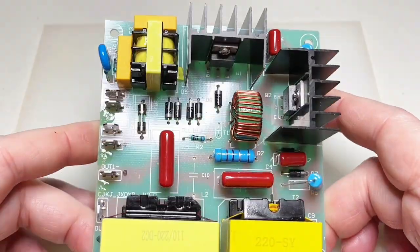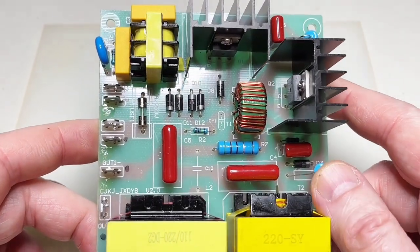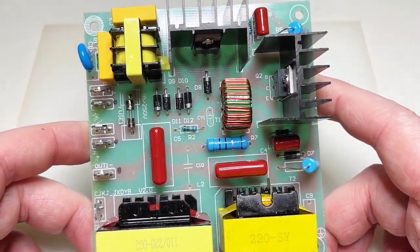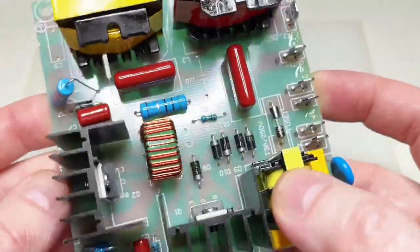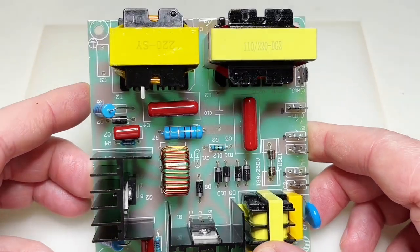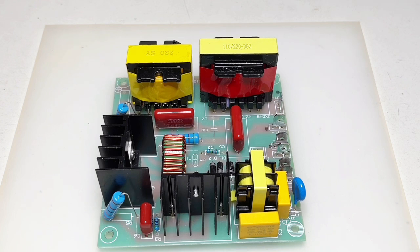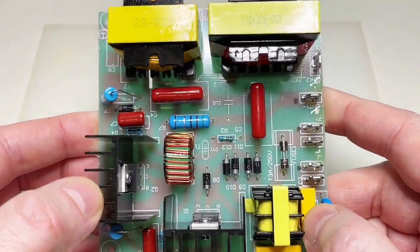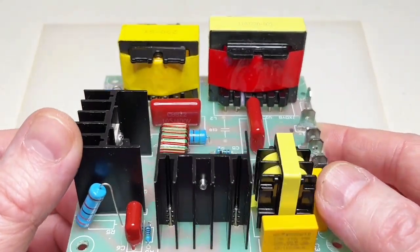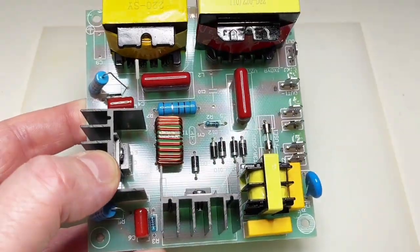A couple of videos ago I did a teardown of a Vevor ultrasonic cleaner that has six 40 kilohertz transducers and a combined ultrasonic power of 360 watts. These 360 watts, the six transducers are connected to each one of these boards.